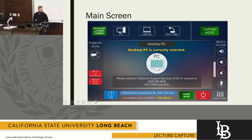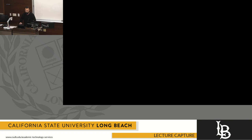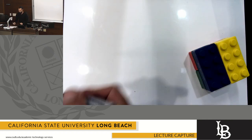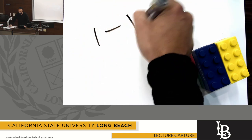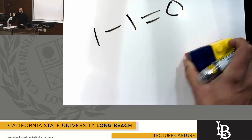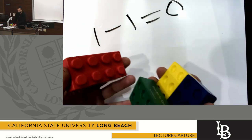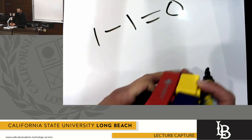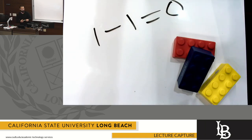I'm currently using the built-in PC, however I would like to demo the document camera. I do that by pushing the document camera button on the screen. This is a great place to be able to write different things, show your class 3D objects, and it's also projected using the in-room projector.